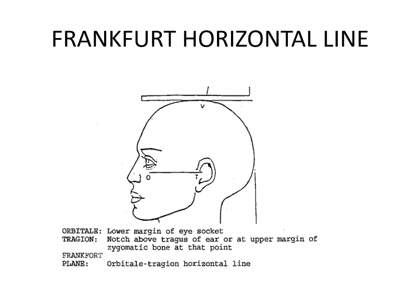The Frankfurt horizontal plane is formed by connecting the orbital point and the tragion. The line connecting the orbital and the tragion is called the Frankfurt horizontal line.